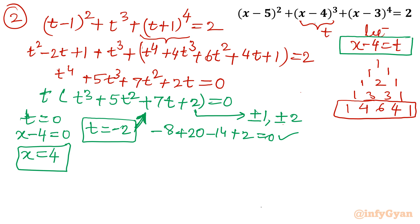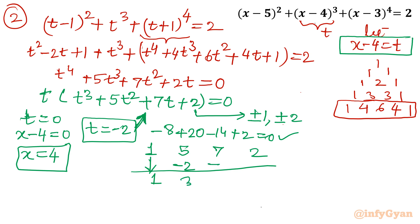Applying synthetic division with root -2 and coefficients 1, 5, 7, 2: bring down 1; -2×1=-2, giving 3; -2×3=-6, giving 1; -2×1=-2, giving 0. So the resulting quadratic is t² + 3t + 1 = 0.